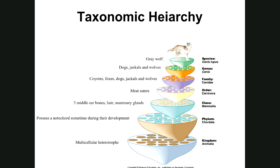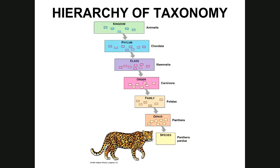Another example: Kingdom Animalia, Phylum Chordata (vertebral column), Class Mammalia (mammals), Order Carnivora (meat eaters), Family Felidae — the cats: tigers, lions, ocelots, leopards, panthers. Genus Panthera includes all panthers — black, white, spotted. The species Panthera pardus has tawny brownish fur with black spots. So you know exactly which organism is being discussed.